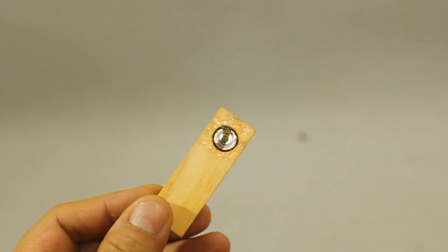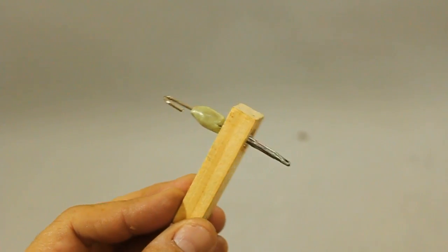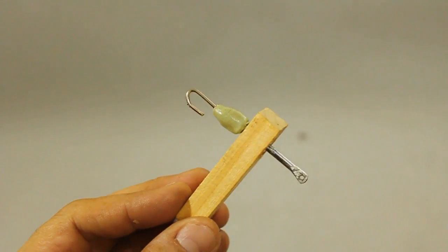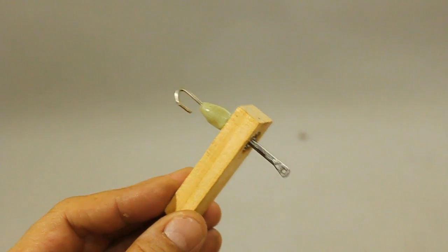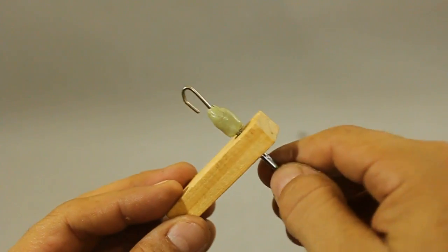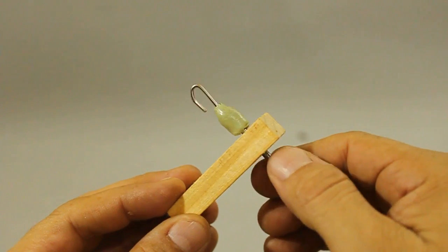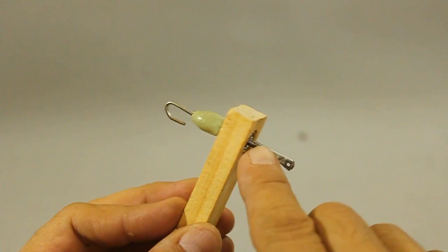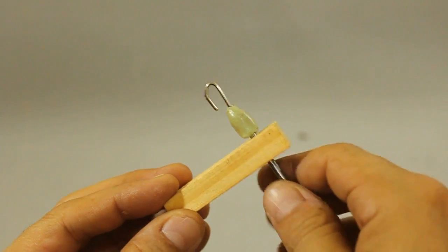The ball bearing is in place and I added this little hook that I made with a paper clip in order to fix the rubber band. The hook is fixed to the metal rod with epoxy putty.